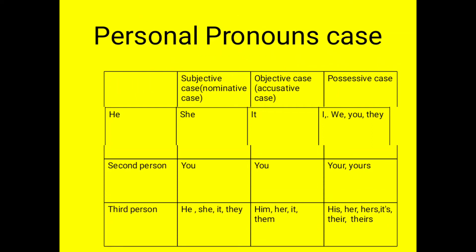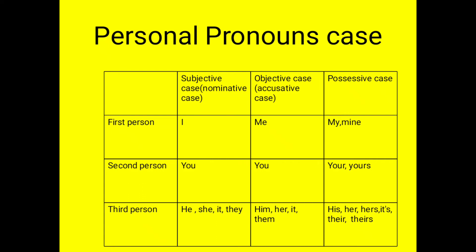Now let us see the personal pronoun cases. As we know, a sentence has a subject, verb and object. Pronouns used at the place of subject are known as subjective case, also called nominative case. First person subjective case is 'I', second person is 'you', third person is he, she, it, they. Pronouns used at the place of object are known as objective case, also called accusative case. First person objective case is 'me', second person is 'you', and third person is him, her, it and them.